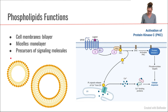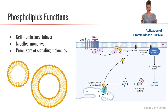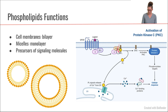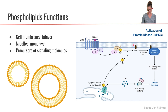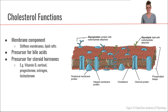We'll talk about micelles a little bit later because they are very important for helping us digest and absorb dietary fat. Another function of phospholipids is that they can act as signaling molecules. In this signaling cascade, we have two fatty acids attached to a PIP2 protein, and when they get cleaved off, these two fatty acids initiate their own separate cascade of events. There are many different types of phospholipids that can function in signaling cascades.